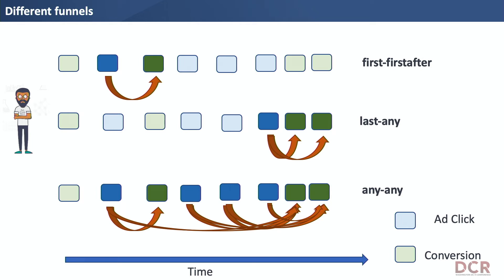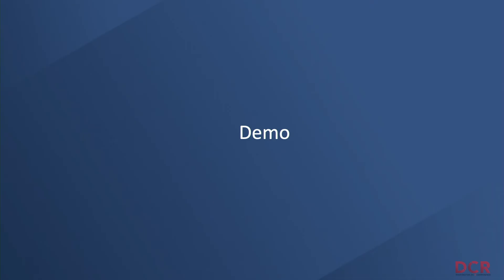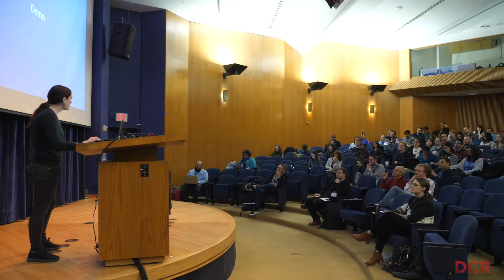Depending on the type of question you're asking, funnel join comes with 16 types of funnels — any combination of first, last, any, and last-before on the first event side, and first, last, any, and first-after on the second event side. This gives you real flexibility to easily switch between different funnel types. To show this more concretely, I'm going to do a live demo based on a blog post I wrote using Stack Overflow data.